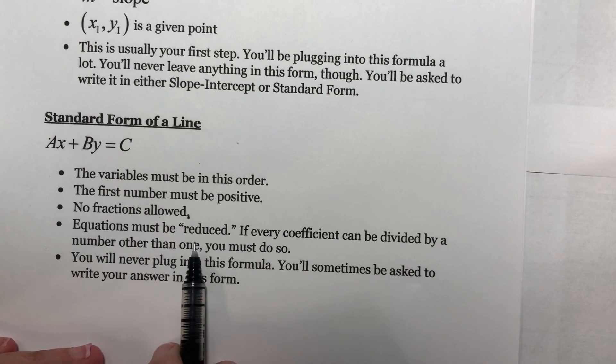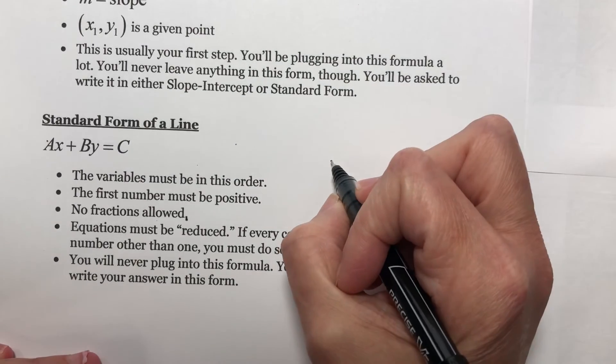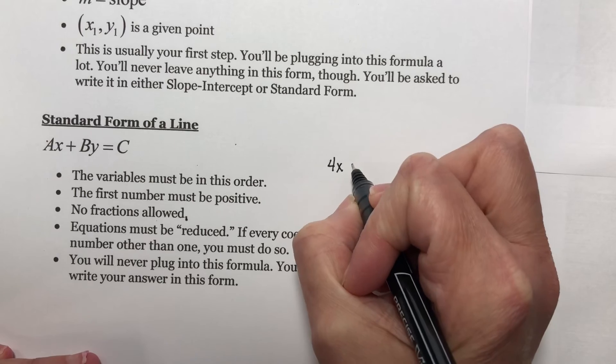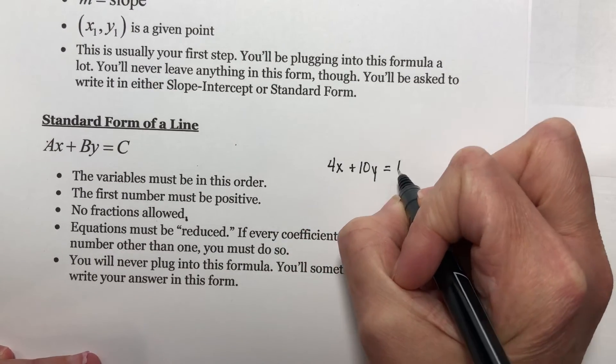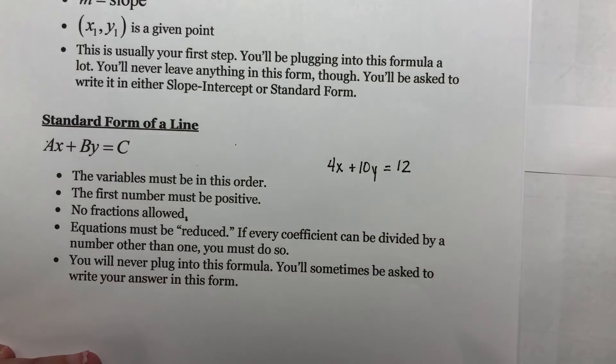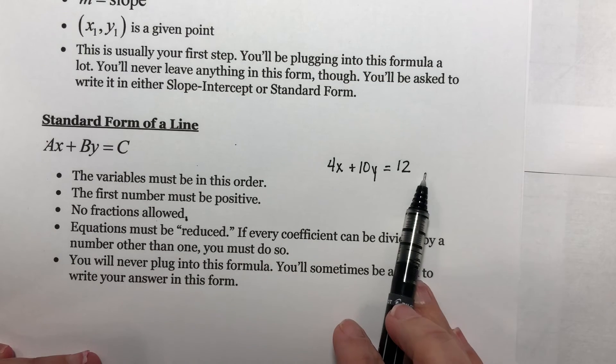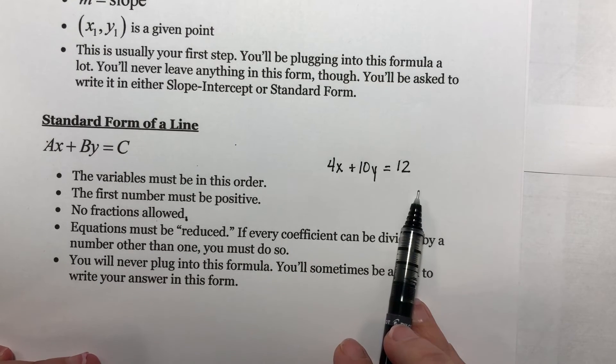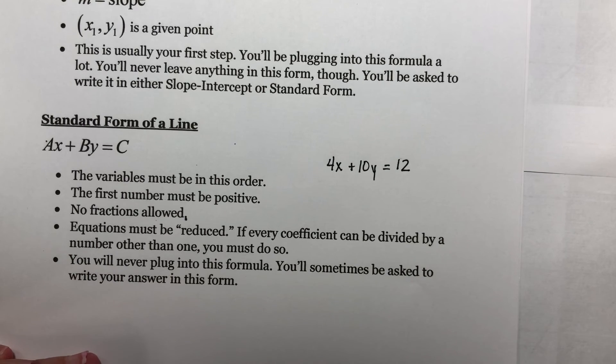Equations must be 'reduced,' though there's not really a good word for this. What I mean is if you had 4x plus 10y equals 12, the variables are in the right order, the first number is positive, and there are no fractions, but this is still not in standard form. Just like with fractions, you ask if there's any number that can divide evenly into all of these to reduce it. Same thing here.